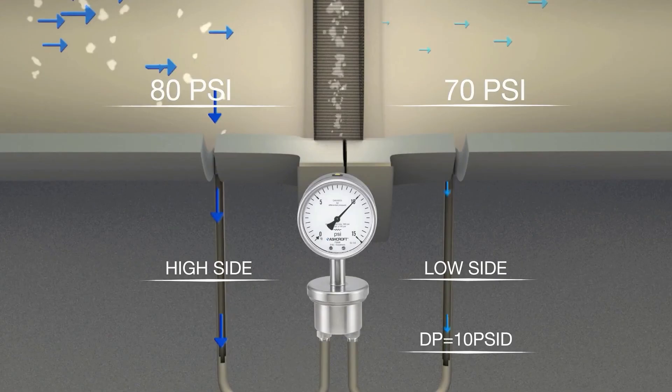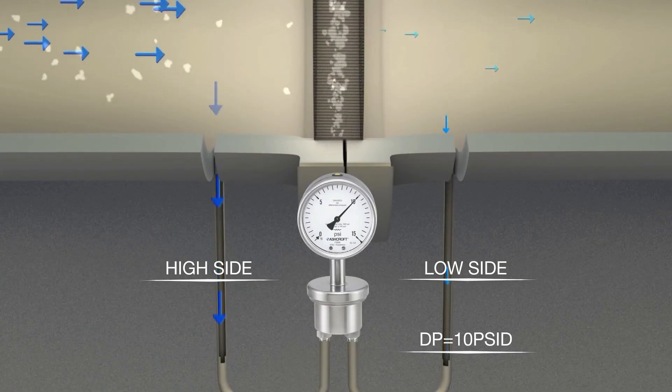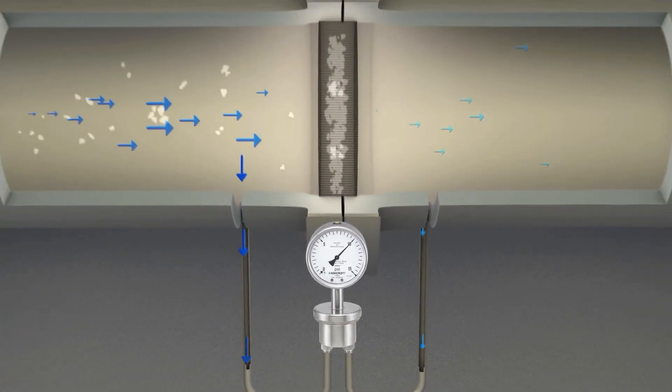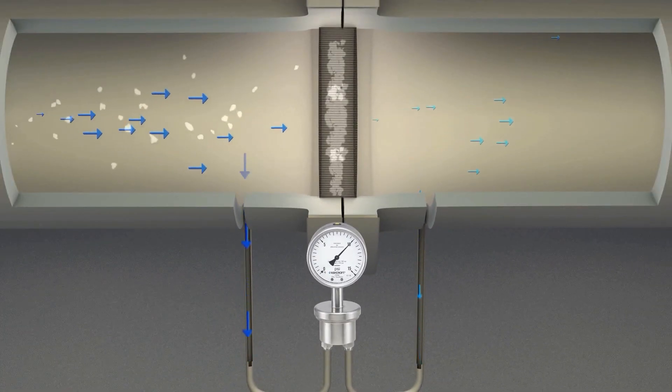The second is the instrument's ability to contain the static pressure, which is simply the pressure in the line while the differential pressure remains the same. A higher line pressure may require an instrument rated for higher static pressure.